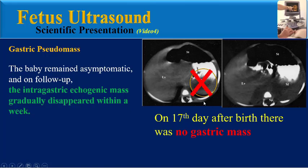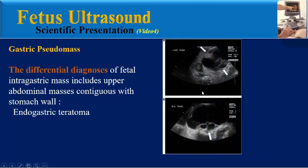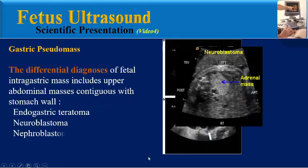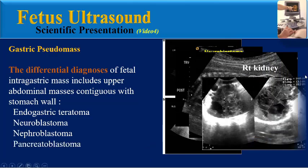On the 17th day after birth, there was no gastric mass. The differential diagnosis of fetal intra-gastric mass includes upper abdominal masses contiguous with the stomach wall, including endogastric teratoma, neuroblastoma, nephroblastoma, and pancreatoblastoma.